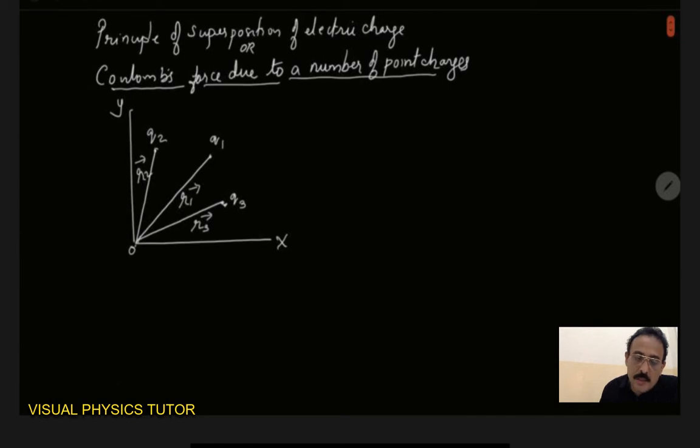So now let us consider what will be the force on q1 due to q2. So I can write here force on q1 due to q2. This can be represented as F12 is equal to 1 by 4 pi epsilon 0, q1 q2 by r12 square.